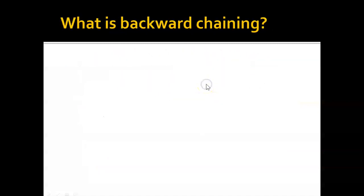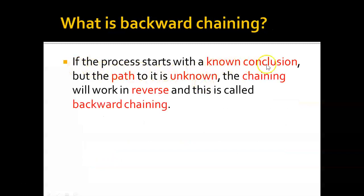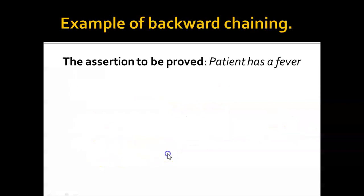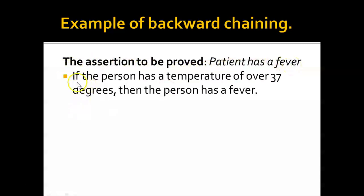What is backward chaining? This is the opposite — if the process starts with a known conclusion but the path to it is unknown, the chaining works in reverse: backward chaining. The system has a goal or solution already stated by the user. For example, the user says they have a sinus infection and the inference engine attempts to find evidence to prove it. If the assertion is that the patient has a fever, the system asks if their temperature is over 37 degrees, and if they agree, it provides evidence confirming the fever.